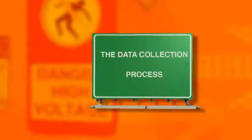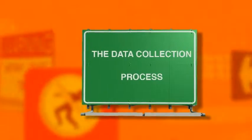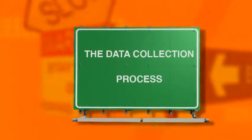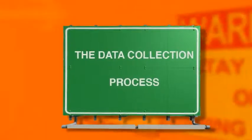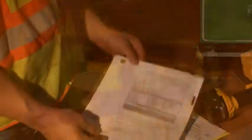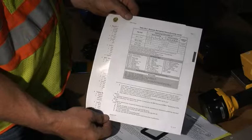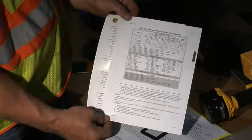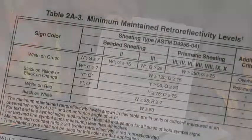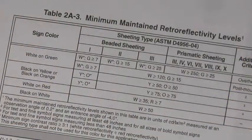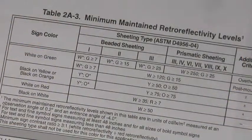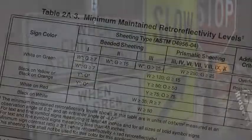In the carrying case, you'll find documents including a summary cheat sheet of the data collection process and the required retro-reflectivity range for each sign color and sheeting type.